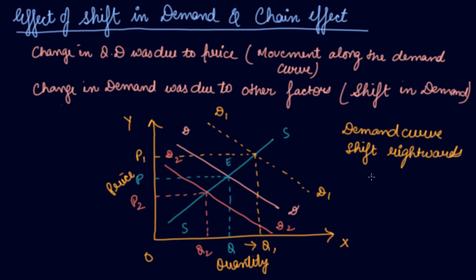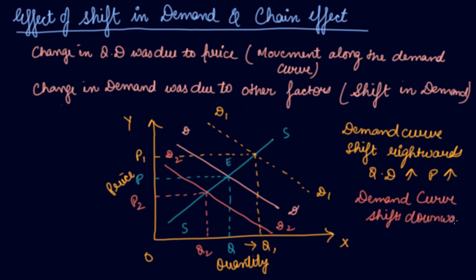So we come to the conclusion: if the demand curve shifts rightward, quantity demanded increases and price also increases. But if the demand curve shifts downward or leftward, quantity demanded decreases and price also decreases. If there is an increase in demand, other things remaining the same, it leads to an increase in the equilibrium price. If there is a decrease in demand, it leads to a fall in the equilibrium price.